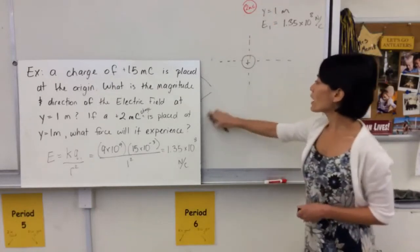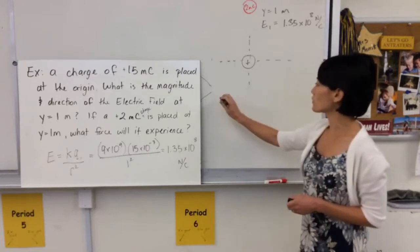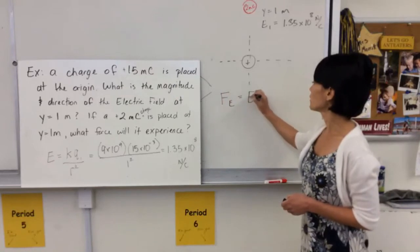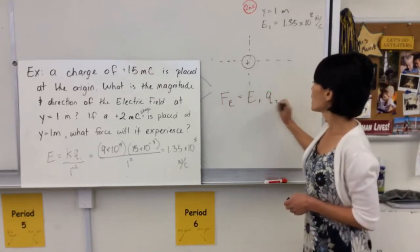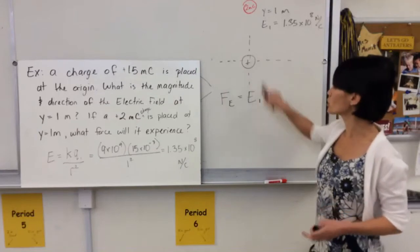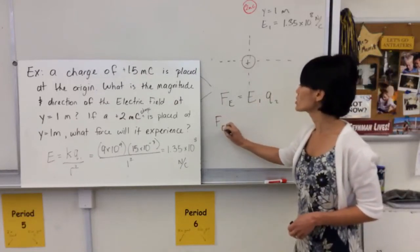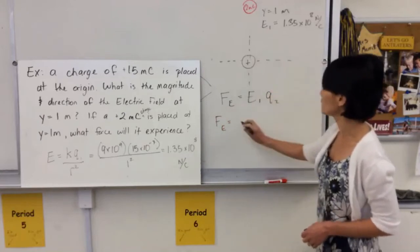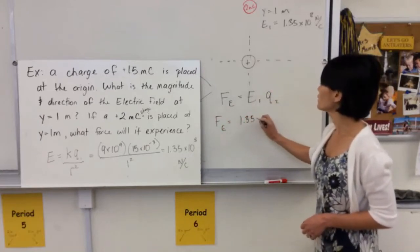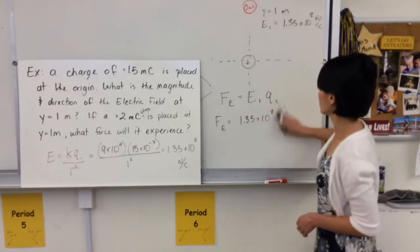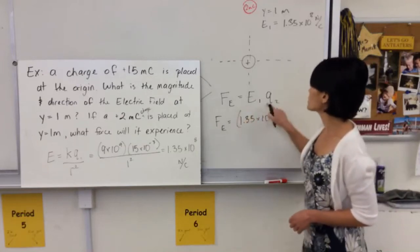So if I already know the electrostatic or the electric field, the equation then would be, okay, I already know my electric field due to this charge. And now I'm putting a charge there. So the electrostatic force is just going to be the field that I calculated. 1.35 times 10 to the 8 newtons per coulomb. Times the charge I put there.